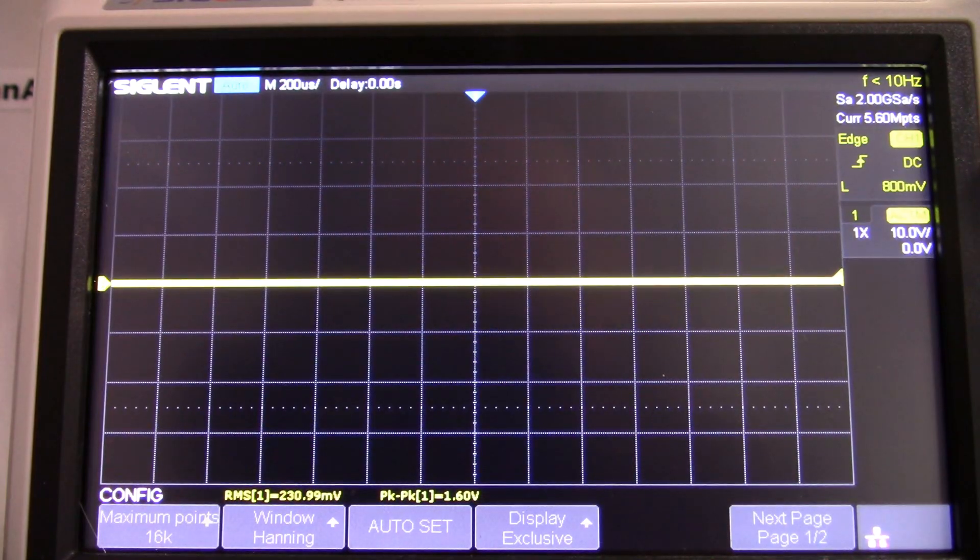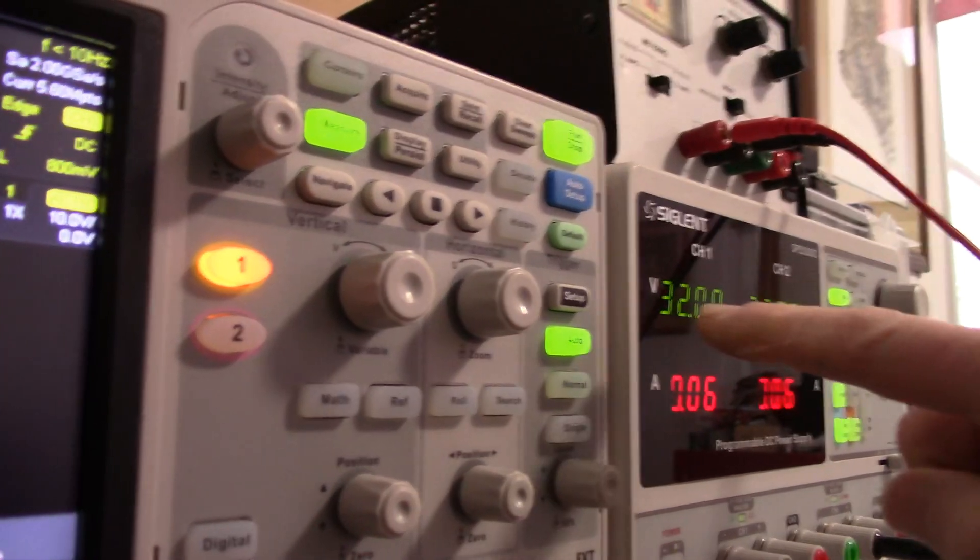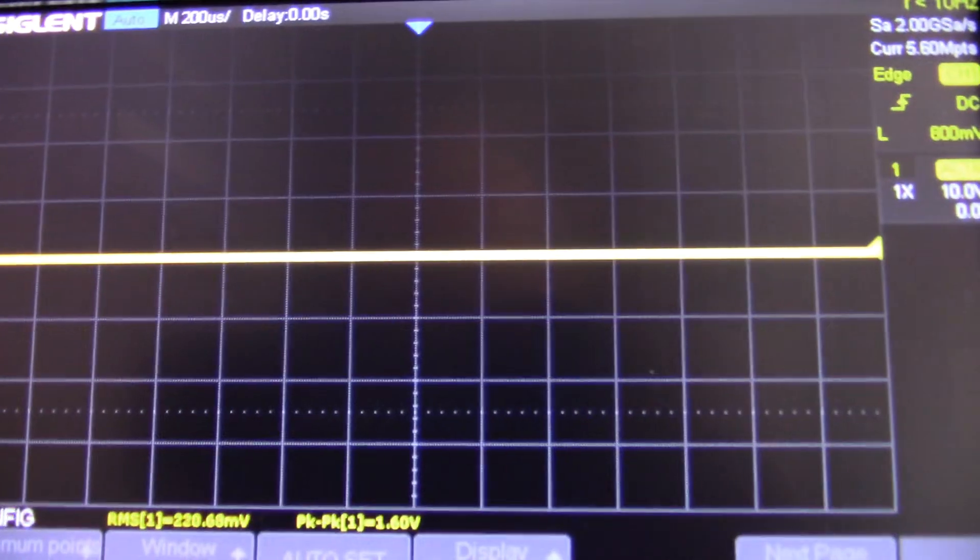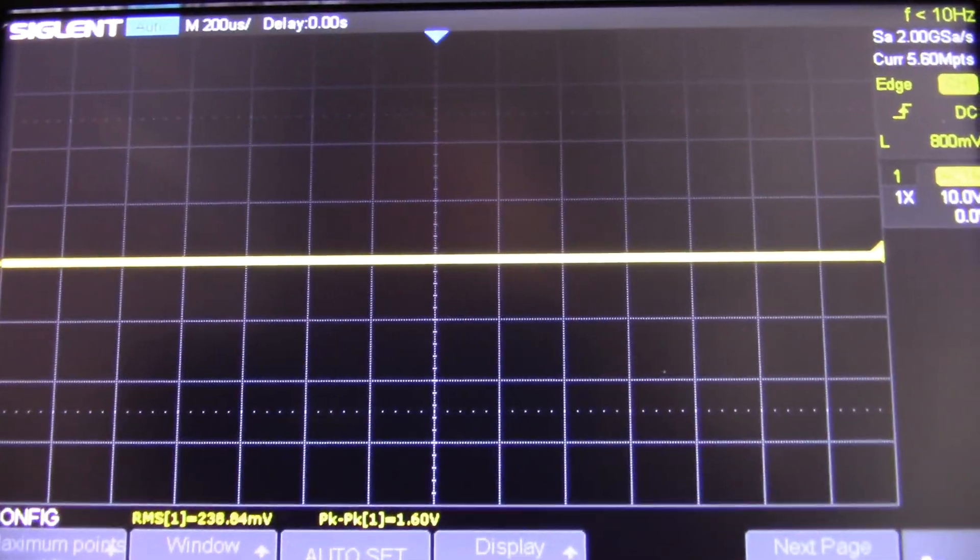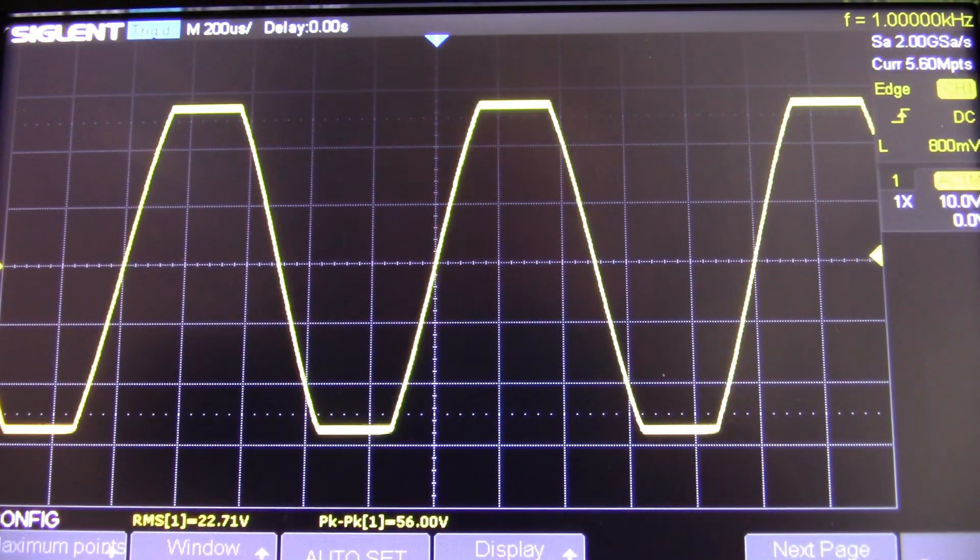Okay we're pointing at the scope here. I have the power supply turned on. Plus and minus 32 volts. Let's see what happens here. Make sure I got my signal going. Yep we're clipping.